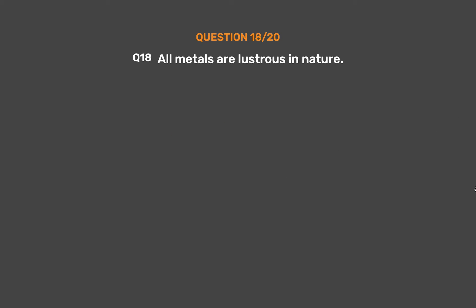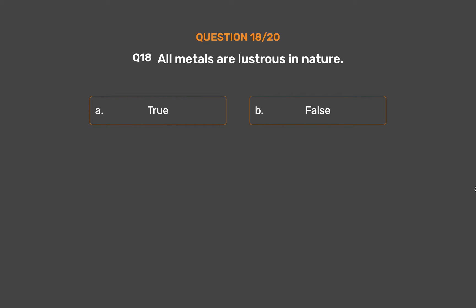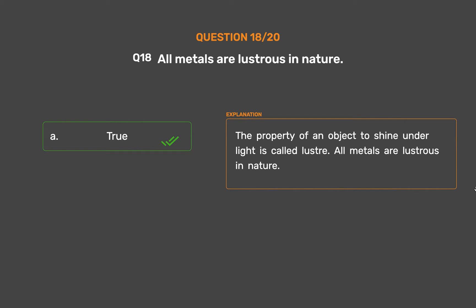Question number 18. All metals are lustrous in nature. Option A: True. Option B: False. The correct answer is Option A, True. The property of an object to shine under light is called lustre. All metals are lustrous in nature.